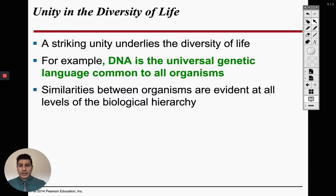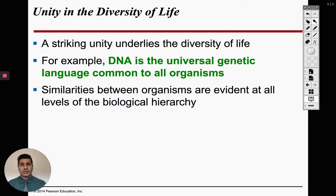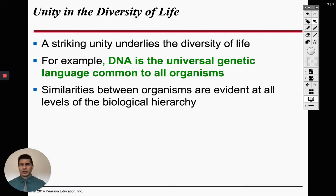DNA is the universal genetic language common to all organisms. We talked about last time making a protein — we start off with DNA in the nucleus, the DNA gets transcribed into RNA, that RNA leaves the nucleus, takes that message, and transforms it into a protein. For other organisms, that genetic code is going to be the same or very similar in order to make that same protein or one extremely similar. It's kind of amazing that different species have DNA so common to one another. That's what we mean by the unity and diversity of life — the DNA is so similar that the proteins it produces are also very similar.